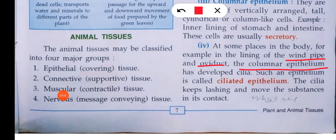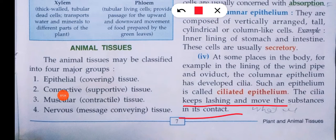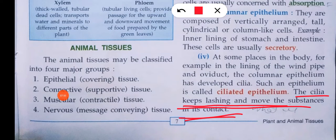Such epithelium is called ciliated epithelium. Cilia keep lashing and moving the substance in contact with them. Ciliated epithelium is found in the oviduct and the windpipe.